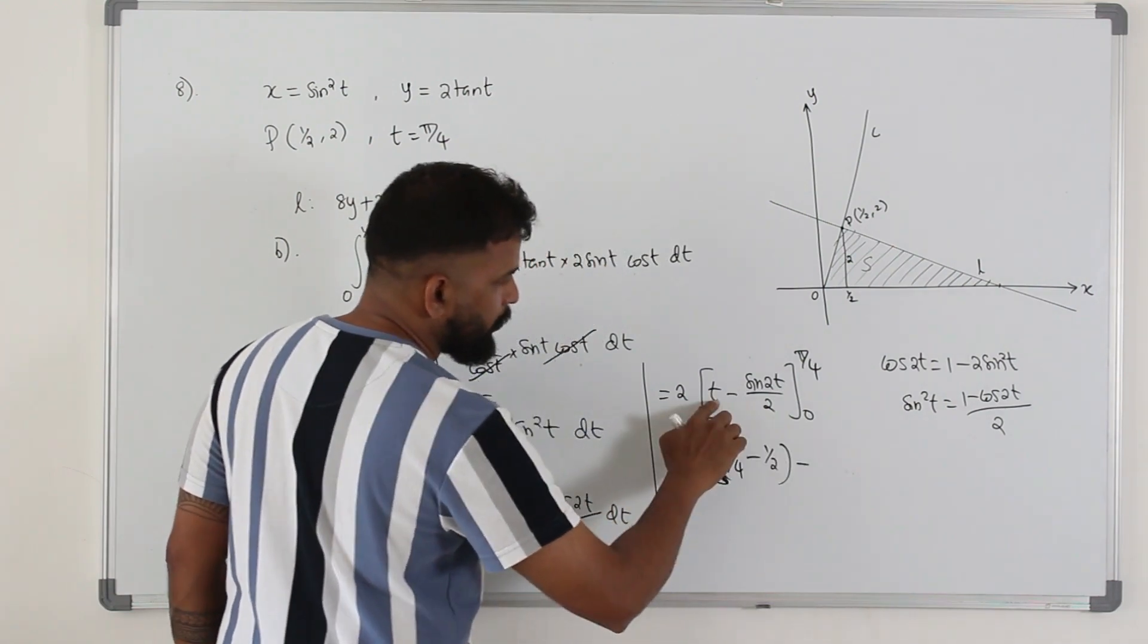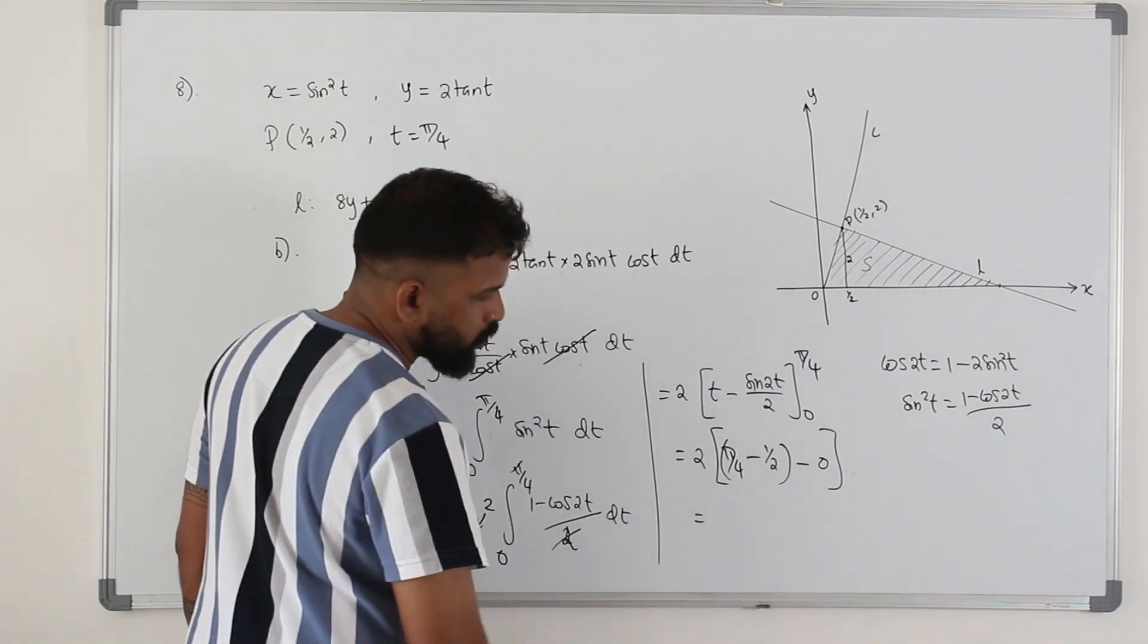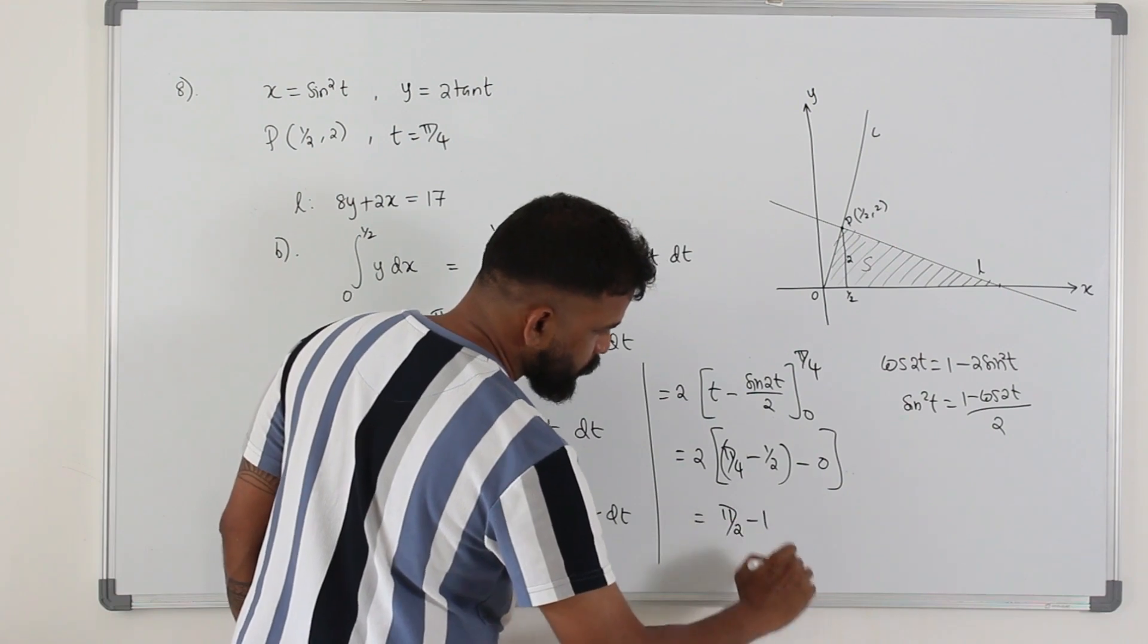Minus lower limit. 0 sine 0 is 0. So multiply through all. You'll get pi over 2 minus 1.